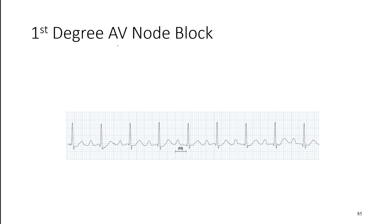Looking at a first-degree AV node block example on the ECG: we've got a normal-looking P wave, normal-looking QRS complex. Let's calculate our PR interval. From the start of the P wave to the Q wave, our PR interval should be no longer than 0.2 seconds or five small boxes. We can already see this one is already longer than 0.2 seconds just at a glance.